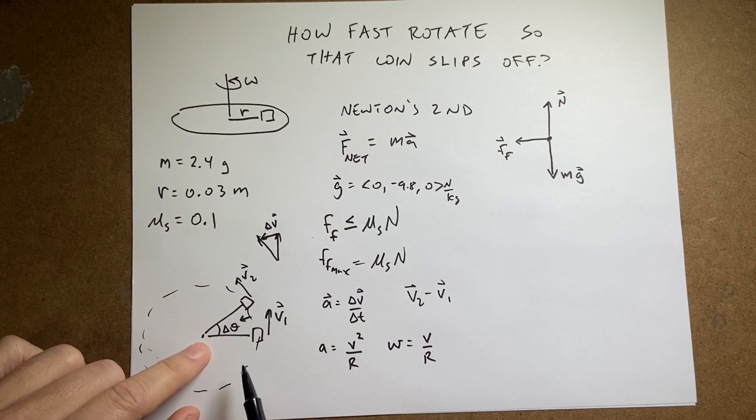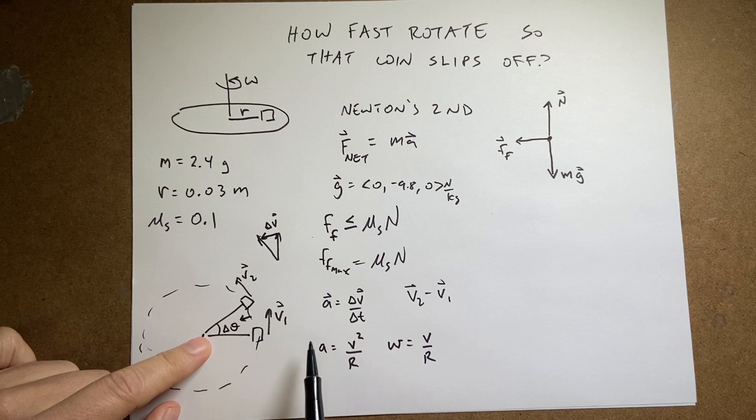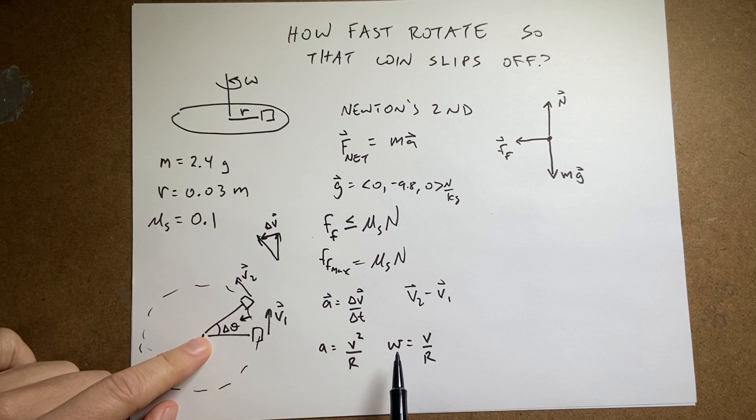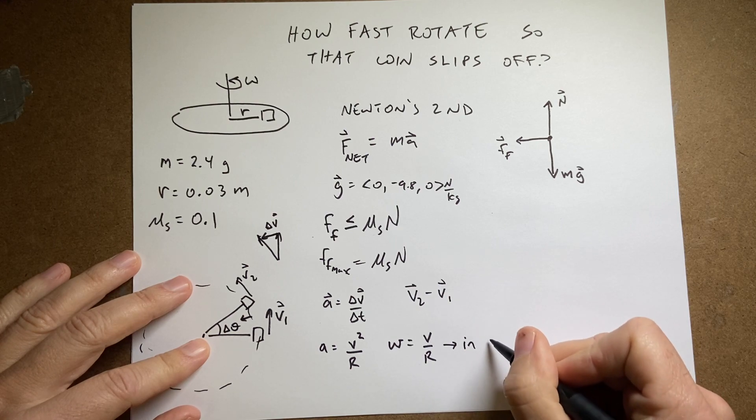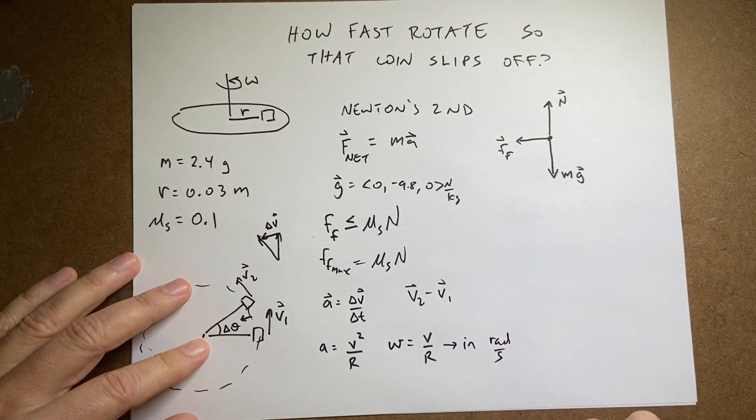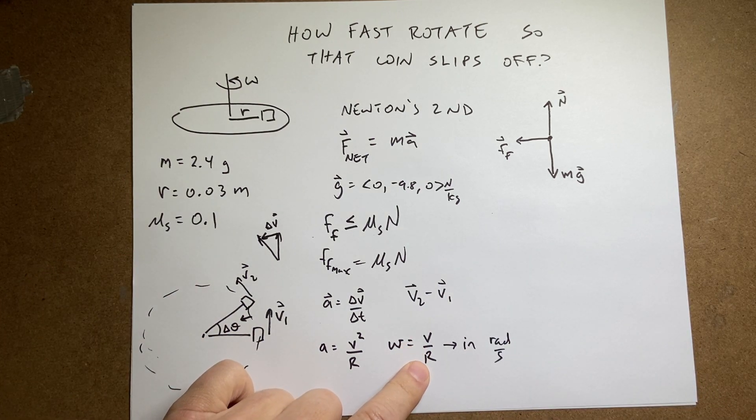So if it's rotating with some speed at a radius, I could calculate the angular velocity in radians per second, that's important, in radians per second, as just the velocity divided by the radius.